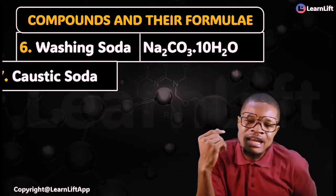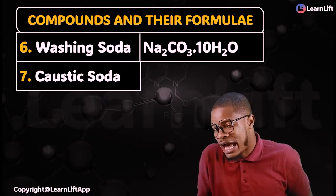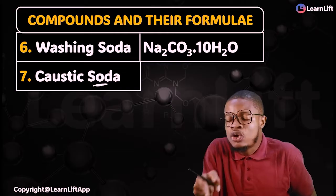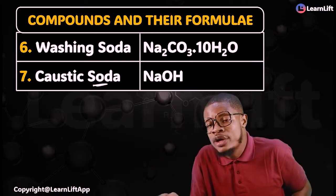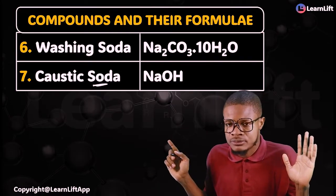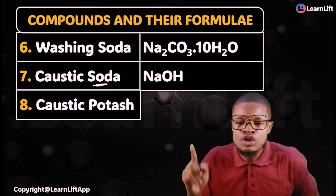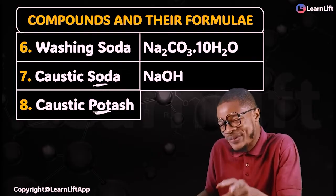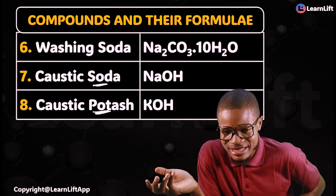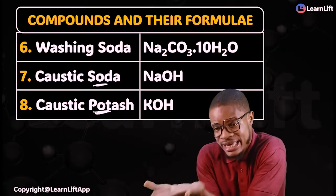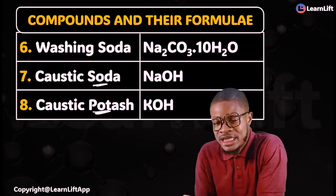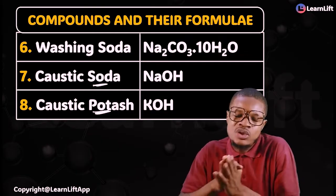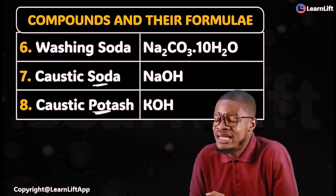Number 7 is caustic soda. From the name 'soda' — sodium. The formula is NaOH. Caustic soda is NaOH — sodium hydroxide. Number 8 is caustic potash. From the name 'potash' — potassium, which is K. Caustic potash is KOH — potassium hydroxide. Sodium hydroxide is caustic soda; potassium hydroxide is caustic potash. Don't play with either of those two.